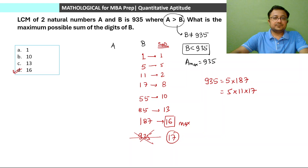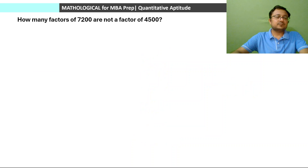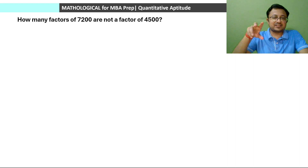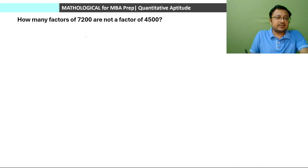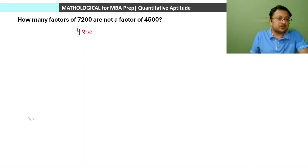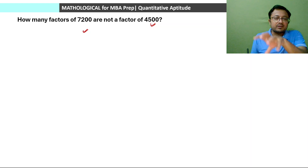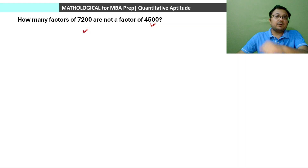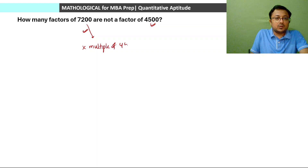Next question: how many factors of 7200 are not a factor of 4500? We have done similar questions in factors before. In previous questions the larger number was always a multiple of the smaller number, but here 7200 is not a multiple of 4500. So many factors of 7200 will not be factors of 4500, and vice versa.